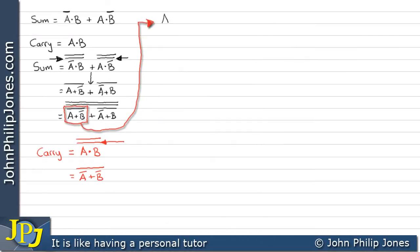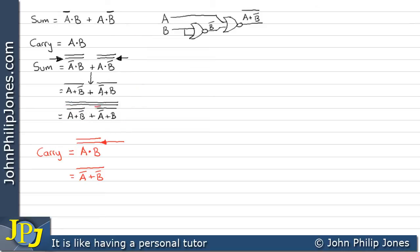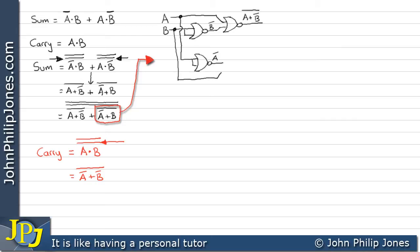Let's highlight this part of the sum expression and build a circuit to represent it. We need variables A and B. First, B goes through a NOR gate with its inputs coupled, giving NOT B. Then we bring A and NOT B into a NOR gate, giving us (A OR NOT B) all NOTed. Similarly, we take a tap off A, put it through a coupled NOR gate to get NOT A.